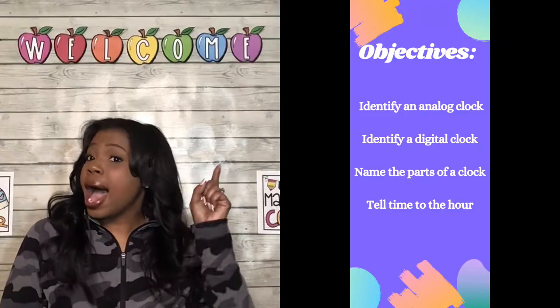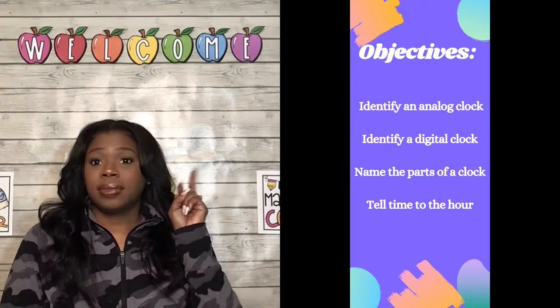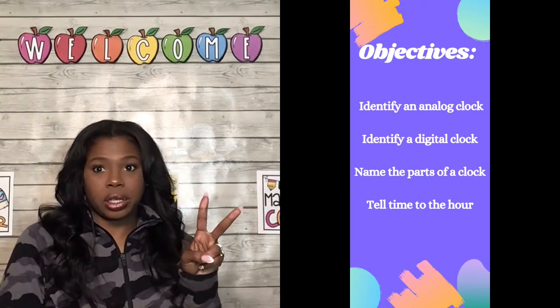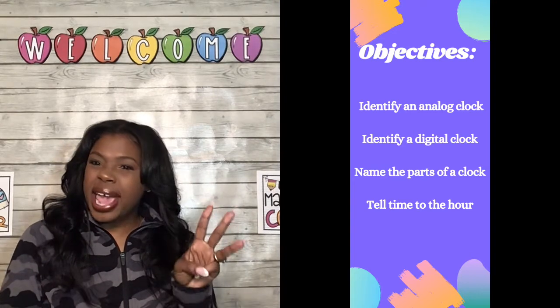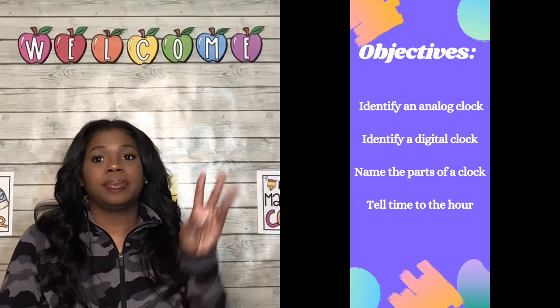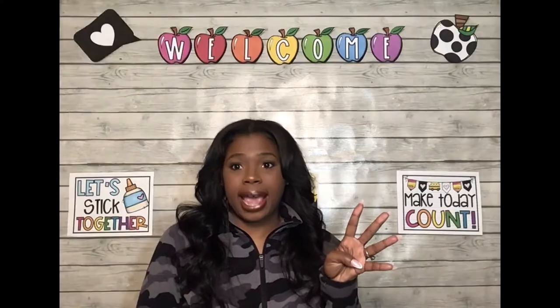After today's lesson, you're going to be able to do four different things: identify an analog clock, identify a digital clock, name the parts of a clock, and tell time to the hour.